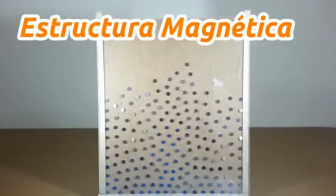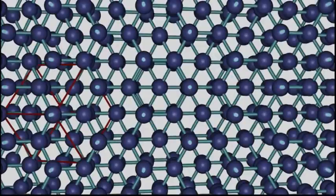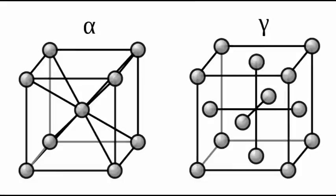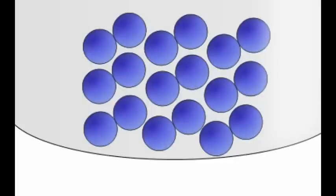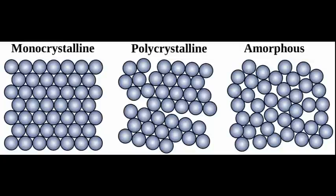We know that all matter is composed of atoms and molecules. In the liquid and gaseous states, atoms move freely and they do not have an order. However, in the solid state, atoms can arrange in perfectly ordered and periodic structures, which is known as a crystalline state.